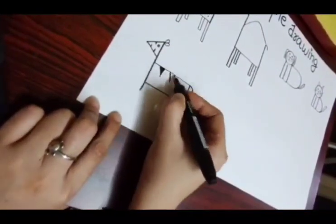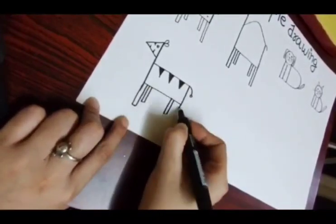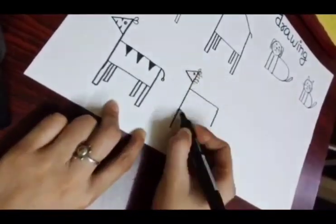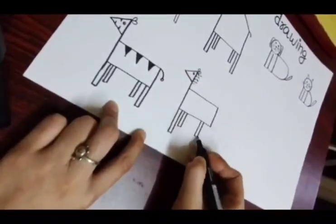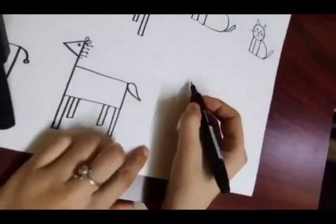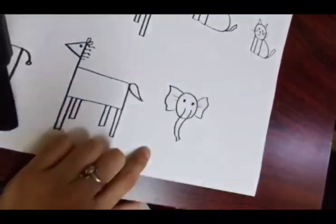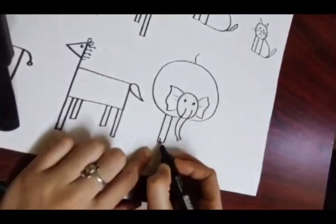To draw different shapes like square, rectangle, triangle, and circle to make various animals. Here in the video, we can see animals like cat, horse, dog, camel, and elephant drawn.